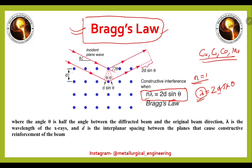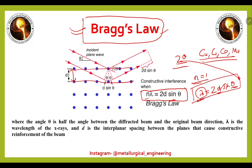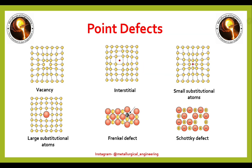d is the interplanar spacing — the distance between two adjacent planes. θ is half of the Bragg angle; the Bragg angle is 2θ, so θ is half of the Bragg angle. When using this formula, always take care to use half of the Bragg angle for θ.